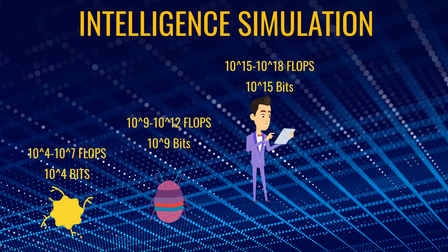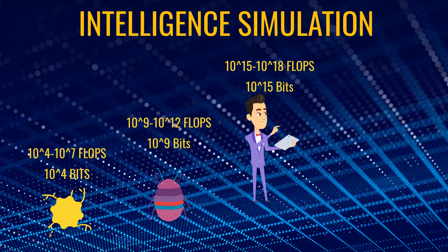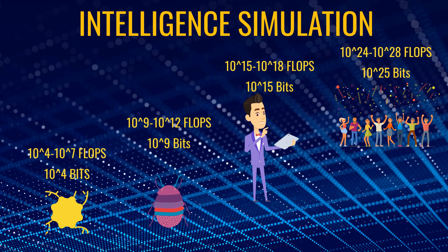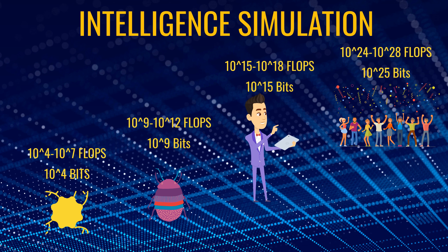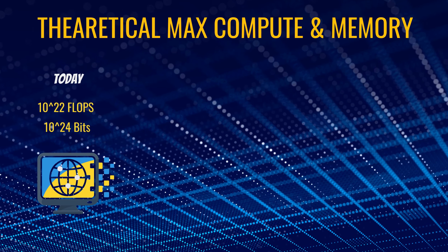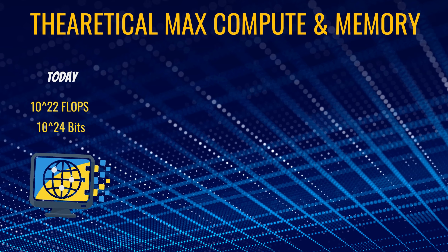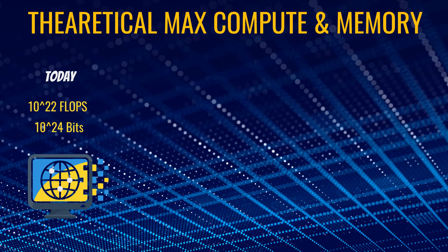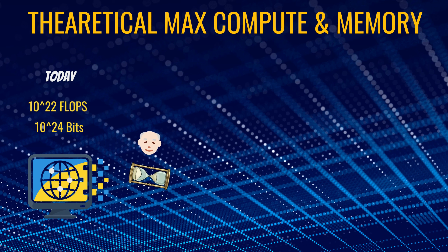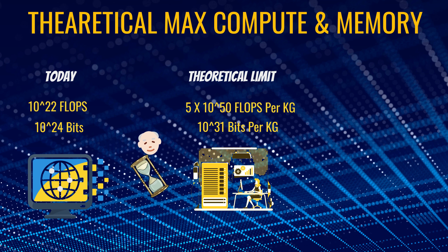How much compute and memory do we need to create a superintelligence? We need up to a million flops and 10,000 bits to simulate a single neuron. Simulating an insect takes a trillion flops, while simulating a single human takes a billion billion flops. Finally, to simulate all humans on Earth, we would need up to 10 to the power of 28 flops of computation. The total computation capacity globally today is 10 to the power of 22 flops, which is enough to simulate 10,000 people.